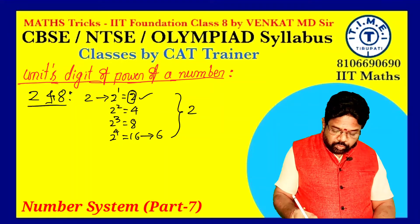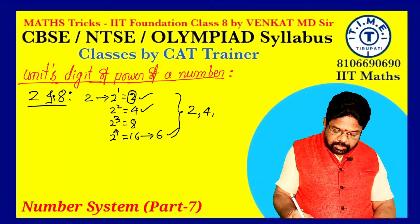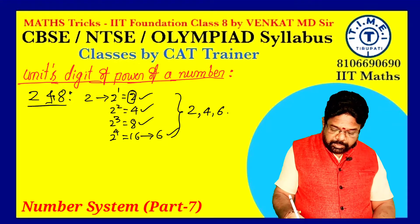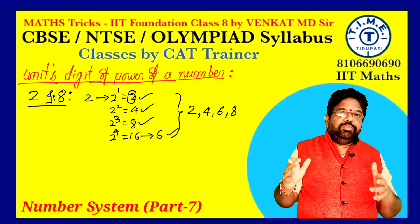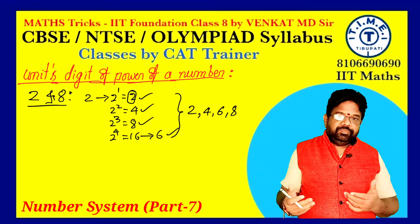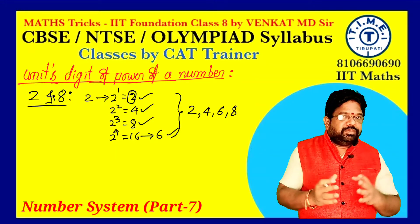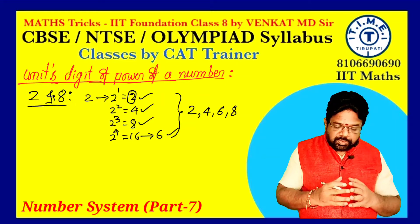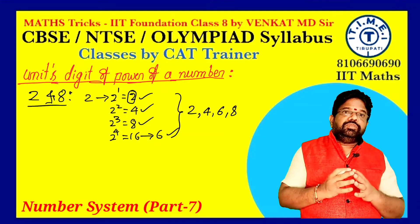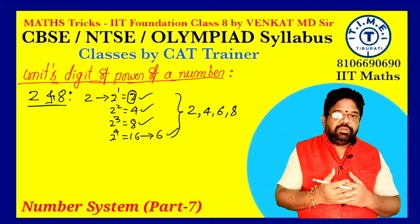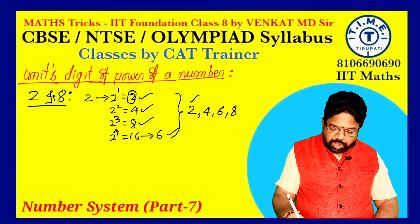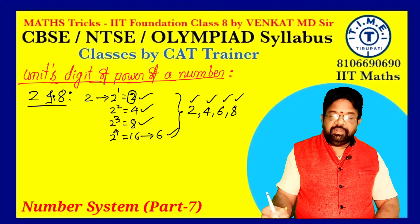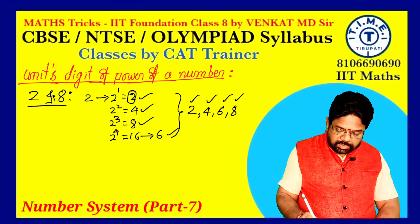The unit's place values for powers of 2 are: 2, 4, 6, 8 — then the cycle repeats. So for 2 raised to any large power, the unit's place value is either 2, 4, 6, or 8.